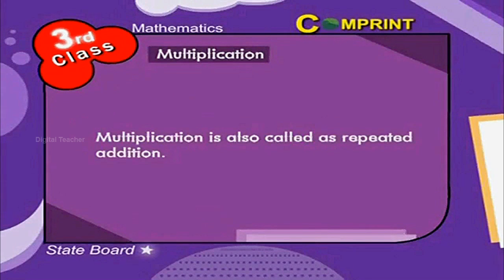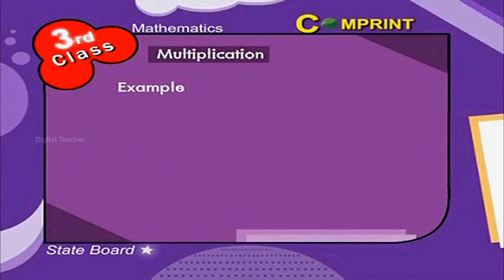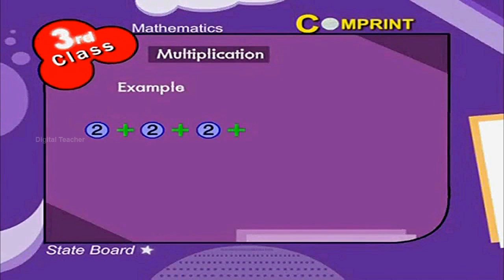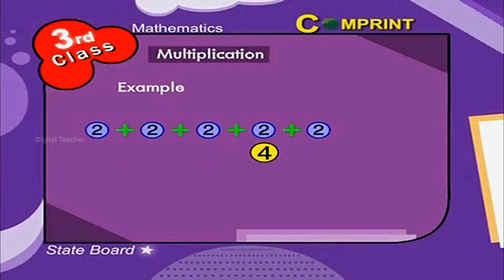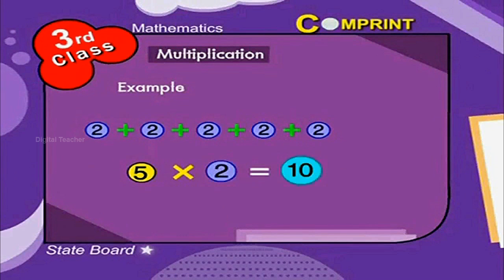Multiplication is also called repeated addition. For example, 2 plus 2 plus 2 plus 2 plus 2. This can be written as 5 into 2 is equal to 10.